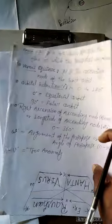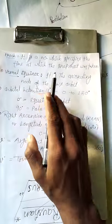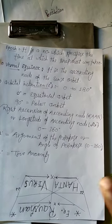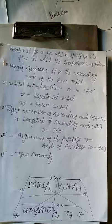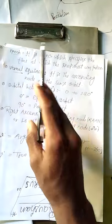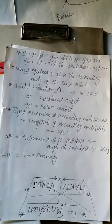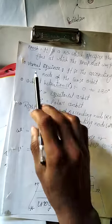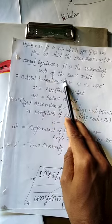Here are some definitions. Epoch is a number which specifies the time at which the snapshot was taken — this is known as epoch. These terms are related to orbital physics. Vernal equinox, as we have seen, is the ascending node of the sun's orbit.